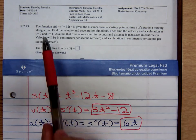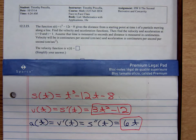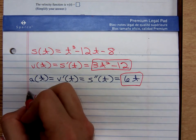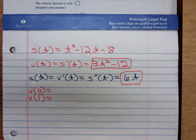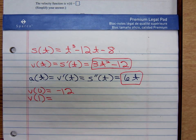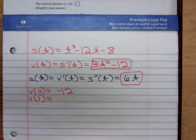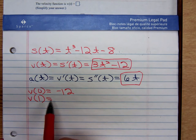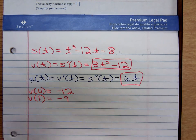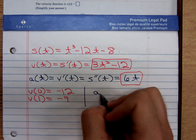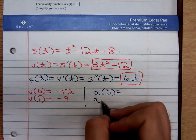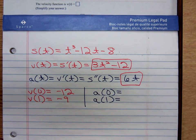They want us to find the velocity and acceleration when t is 0 and when t is 1. So we're going to have to plug in 0 and 1 into our velocity function. Plugging in 0, we get negative 12. Plugging in 1, we get 3 - 12, which is negative 9.